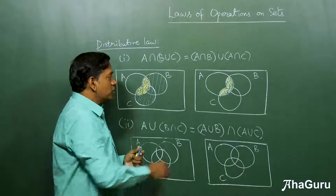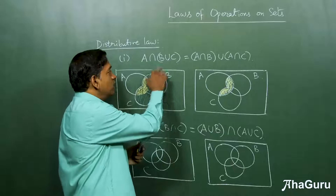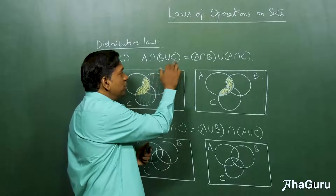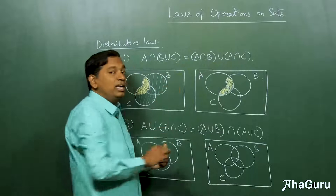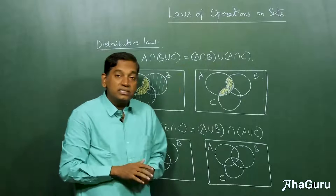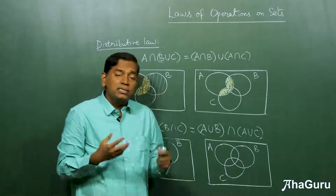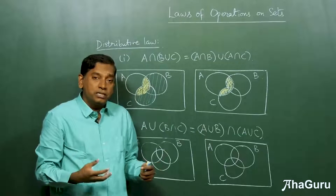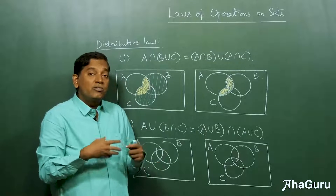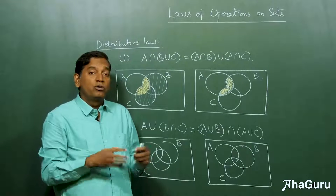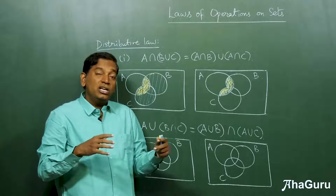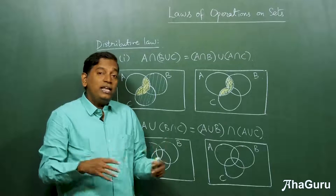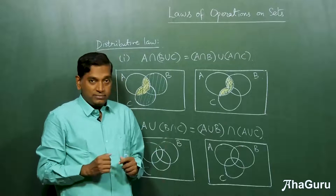So this is why A intersection B union C is A intersection B union A intersection C. And just like distributive law in numbers, this law will be very useful when we do operations on more than two sets.